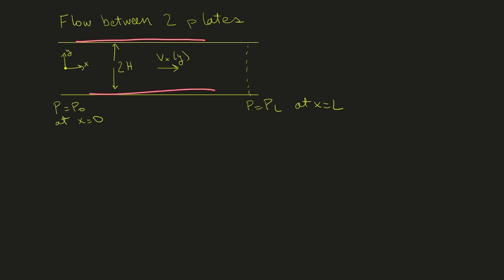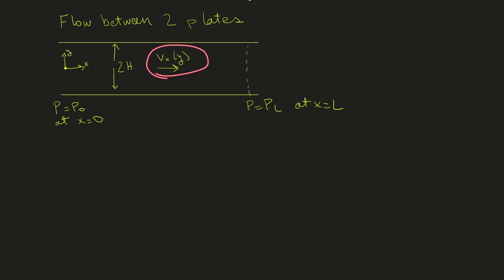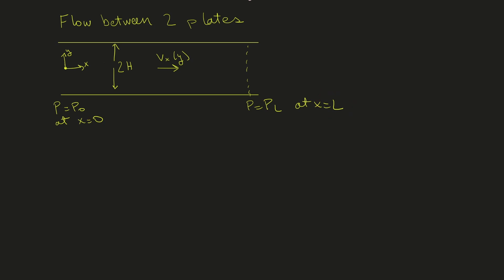These are our two parallel plates here, and we have our origin centered in the middle. We have our x direction going horizontally, y pointing vertically. The separation between the two plates is twice h. Our goal is to figure out the velocity profile in the x direction. What's driving the flow is a pressure drop — pressure P0 at x equals zero, and pressure PL at x equals L at the end of our pipe.